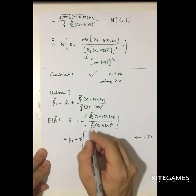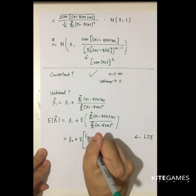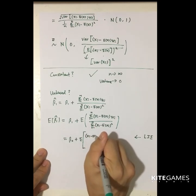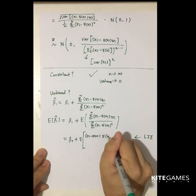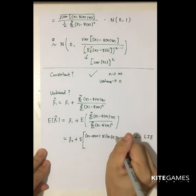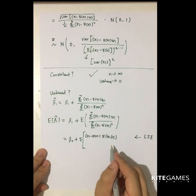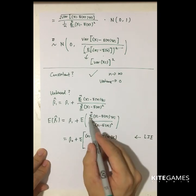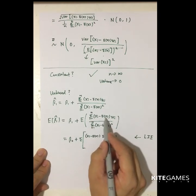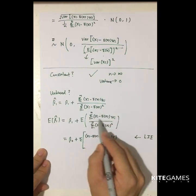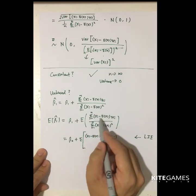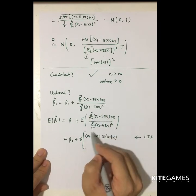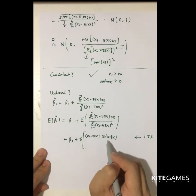First, we take out (x_i minus E[x]). We put the expected value of u_i given x here. Since we condition on x, we can draw the x variable out of the expectation bracket. The denominator remains unchanged.